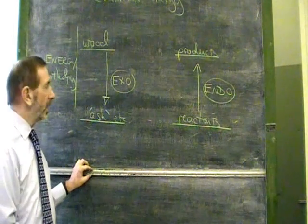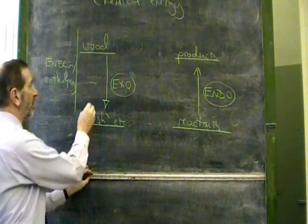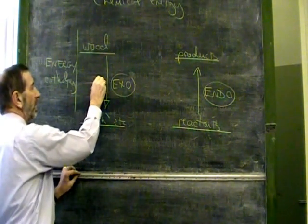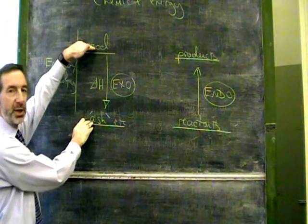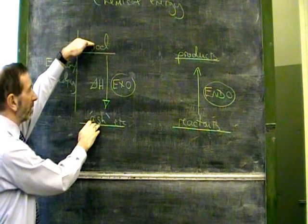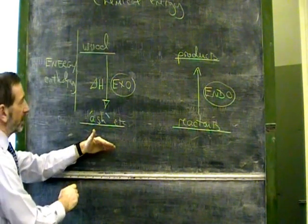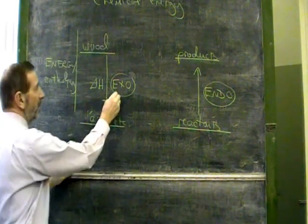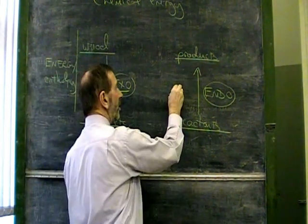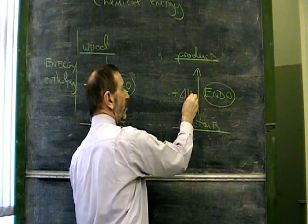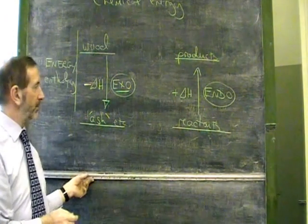One way to convey this information is to use the symbol delta H, and delta H mainly means the change in energy between the reactants and the products. If there's a drop in energy, as in an exothermic reaction, we give it a negative symbol. If there's an increase in energy, then the delta H, the enthalpy change, is given a positive symbol.